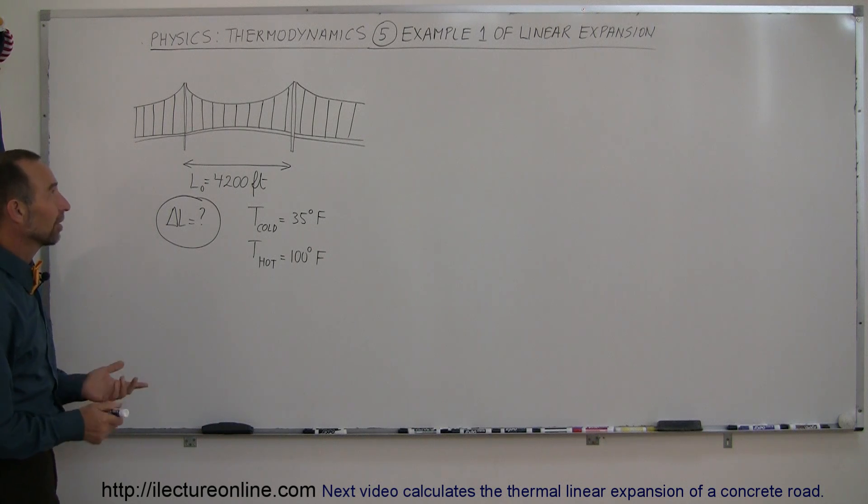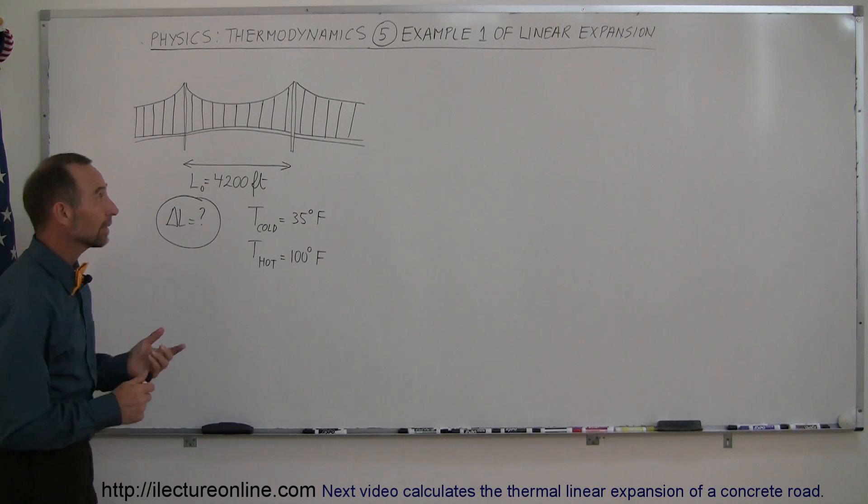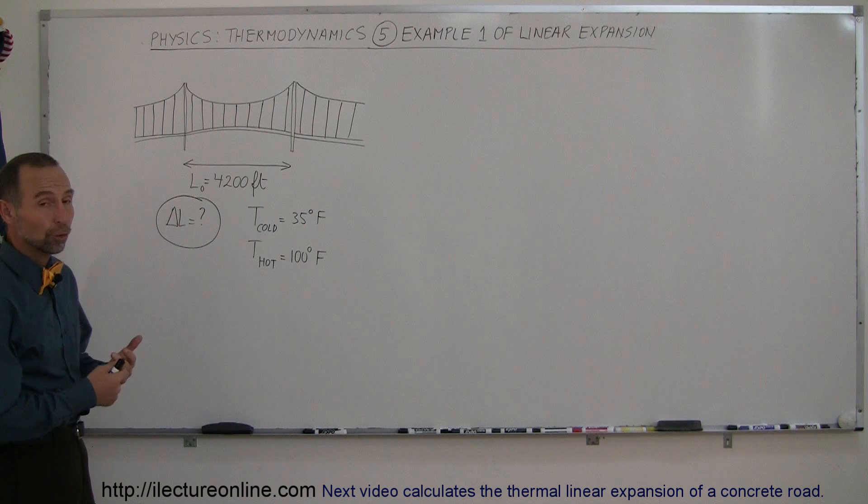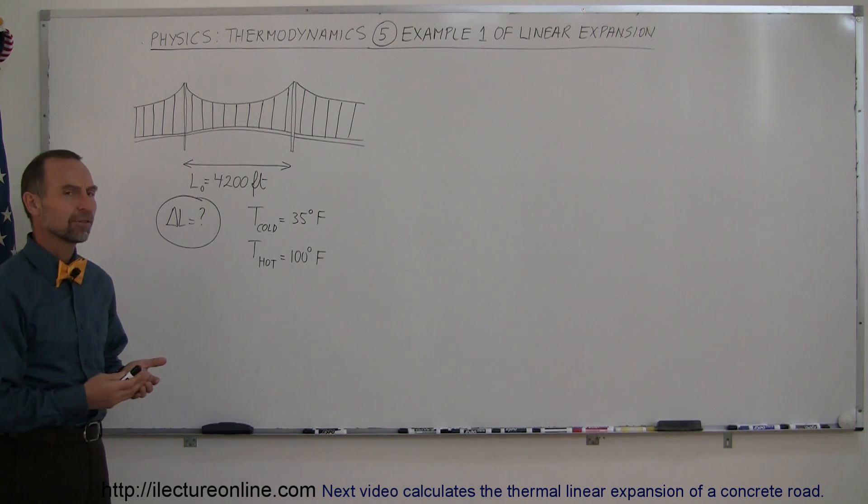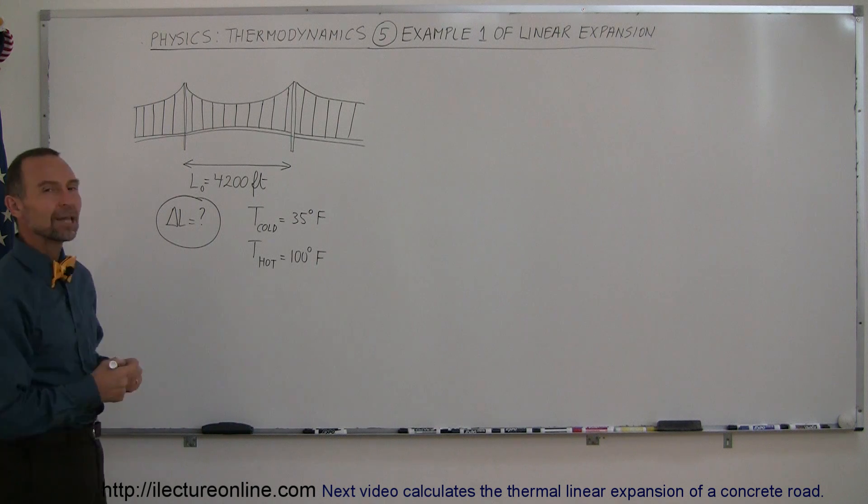Welcome to Electron Line, and here's a nice little example of how we calculate the change in length due to thermal changes, temperature changes, of an object. In this case, let's say this is the Golden Gate Bridge, in case you couldn't tell what it was.